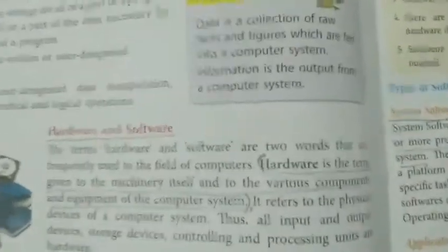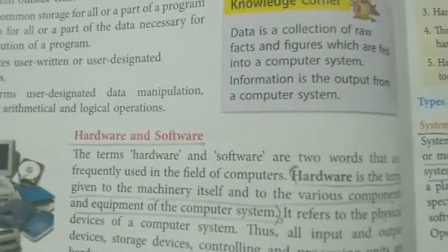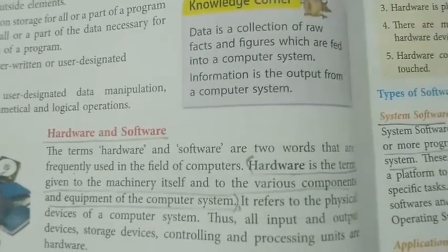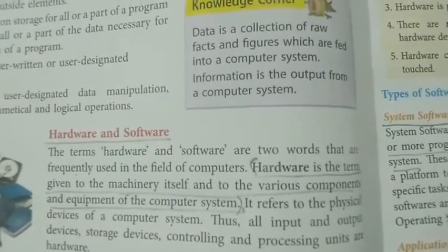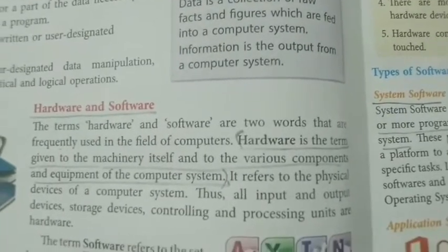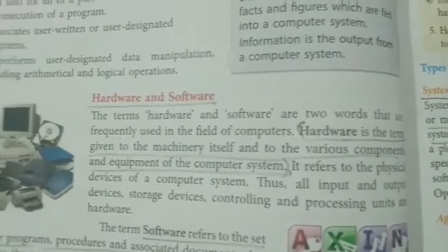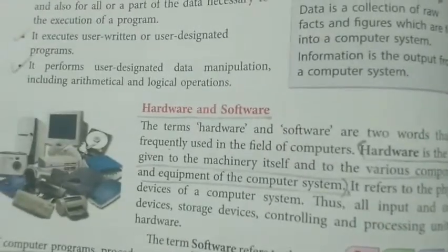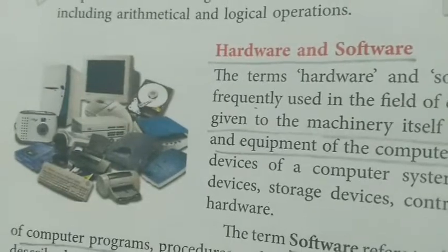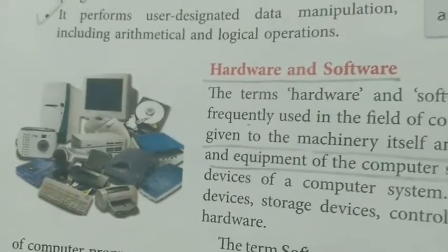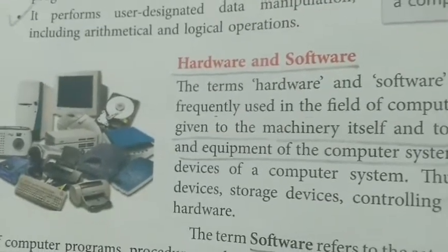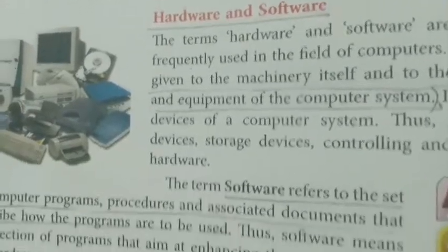Two very common terms are hardware and software. The definition of hardware is: hardware is the term given to the machinery itself and the various components and equipment of a computer system. Examples include mouse, monitor, keyboard, and speaker — all of these come under hardware.